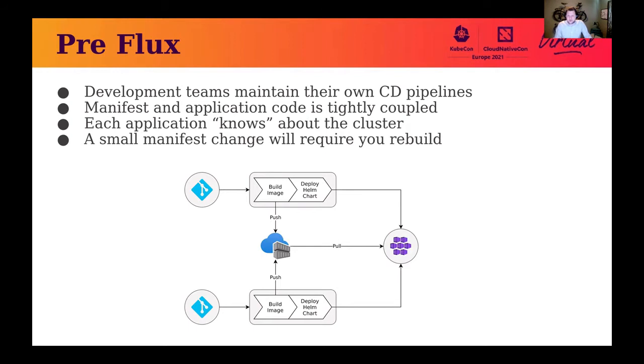They would have multiple applications that would each have a continuous delivery pipeline that was first building the image and then pushing that image to a central registry. Then it was running some sort of kubectl apply or helm install upgrade command towards the cluster. This resulted in applications having their manifests and source code tightly coupled as each application would basically have their own unique manifest.